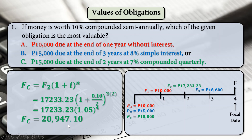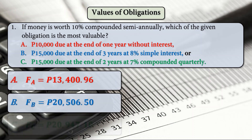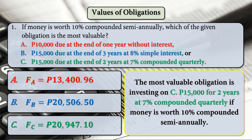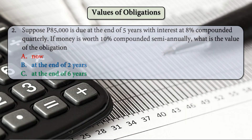This is the future worth at year 4, our focal date. Comparing the three future amounts at the end of 4 years, whichever is bigger is the most valuable. The most valuable obligation is investing in Letter C — 15,000 pesos for 2 years at 7% compounded quarterly — when money is worth 10% compounded semi-annually.